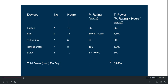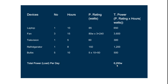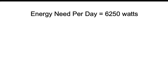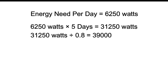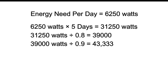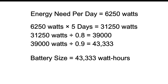Now that we have those details, we can factor in our depth of discharge, inverter efficiency and days of autonomy to figure out the battery size. Our total energy requirement per day is 6,250 watts. First we multiply this by five days of autonomy, which gives us 31,250 watts — approximately close to 32 kilowatts. Next, we divide 31,250 watts by 0.8 battery DoD, which gives us 39,000 watts. Then we divide 39,000 watts by our inverter efficiency of 0.9, which gives us approximately 43,333 watts. So we need a battery this size to meet our energy requirement.